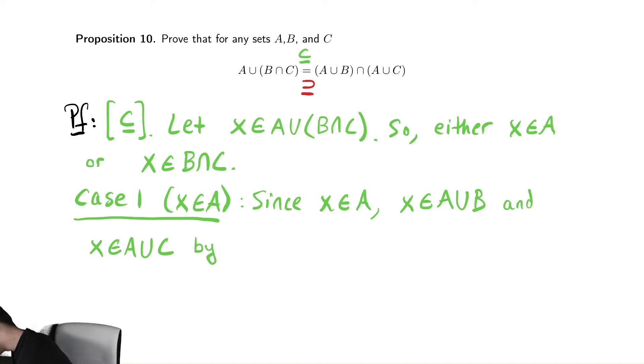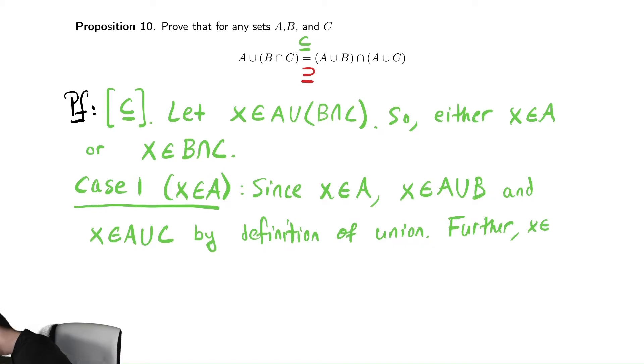So, we maybe even cite by definition of union. If it's in A union B, and it's in A union C, it must be in the intersection of those two sets. Further, x is in A union B intersect A union C, by definition of intersection.